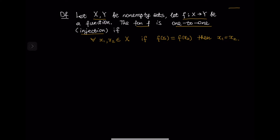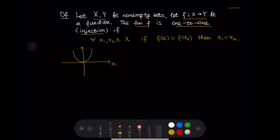Let us try to understand what this means by looking at a function that is not one-to-one. Consider a parabola and draw a horizontal line. This horizontal line intersects the parabola at two different points whose x-coordinates we denote by x1 and x2. These two points have the same y-coordinate, equal to f(x1) and also equal to f(x2). However, x1 is clearly not equal to x2, so this function is not one-to-one.